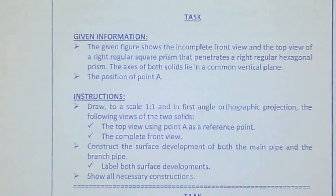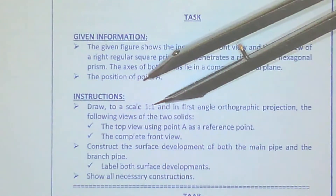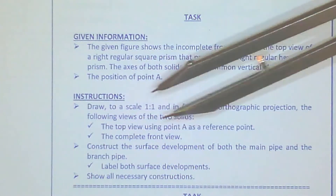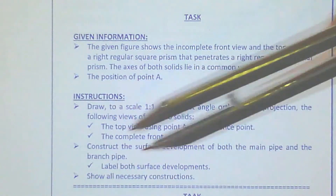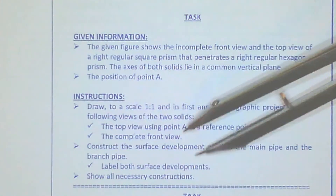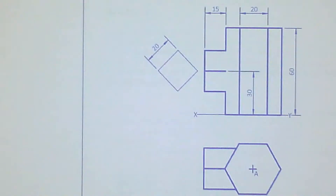Good morning students. Today we're going to be looking at page 76 again — we're going to have two geometric shapes that will penetrate. The instructions read: the scale remains one to one, you have to redraw the top view and complete the front view, construct the developments for both the primary and secondary, and label both and show all necessary instructions — basically the same as before.